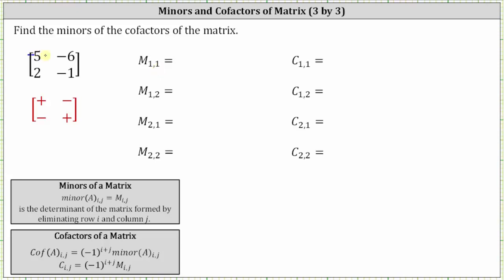If we eliminate row one and column one from the given matrix, notice how we have a one by one matrix with an entry of negative one. The minor one comma one is equal to the determinant of the one by one matrix with an entry of negative one. Whenever we have a one by one matrix, the value of the determinant is the entry itself, and therefore the determinant and minor one comma one is equal to negative one.